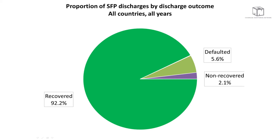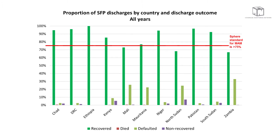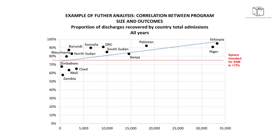We can also compare all countries against OTP and SFP Sphere standards, and further explore correlations between program size and outcomes. Ethiopia and Niger have very large program sizes and also have the highest cure rates. The four countries below Sphere standards have much smaller programs. There are other contextual factors to consider, but the database allows us to identify trends and conduct further analysis.